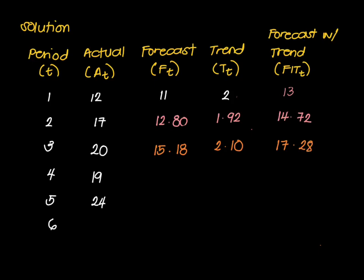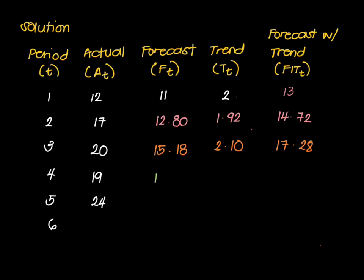For period 4, the values we look at are the actual of period 3, which is 20, and the previous FIT of 17.28. Plugging into the formula gives F = 17.82. For the trend: using 17.82 minus 15.18, and previous trend 2.1, gives T = 2.32. So FIT for period 4 = 17.82 + 2.32 = 20.14.